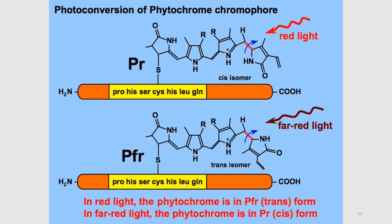Here is the diagram showing the changes that occur in the structure of the phytochrome chromophore when red light is given. The bond becomes isomerized or changed into another form — the trans form. This chromophore is attached to a protein via a sulfur bridge. When far-red light is given, the trans form converts back to the cis form. Red light produces the PFR form, and far-red light converts it back.